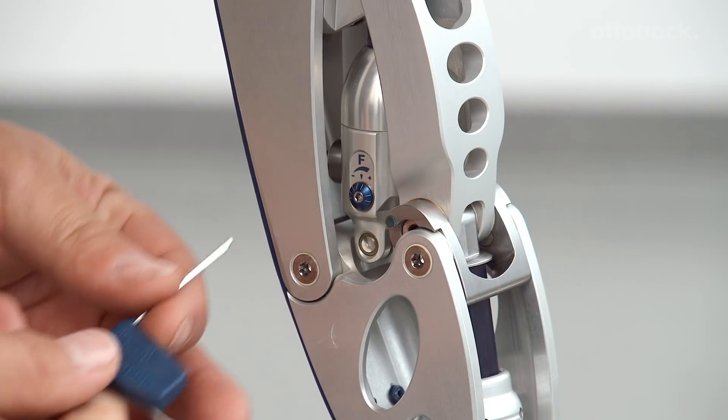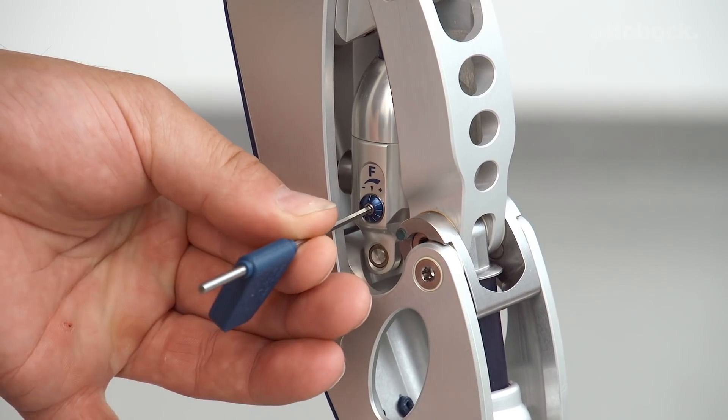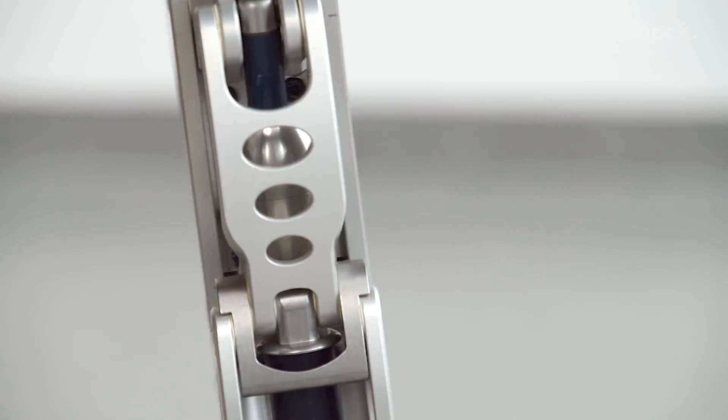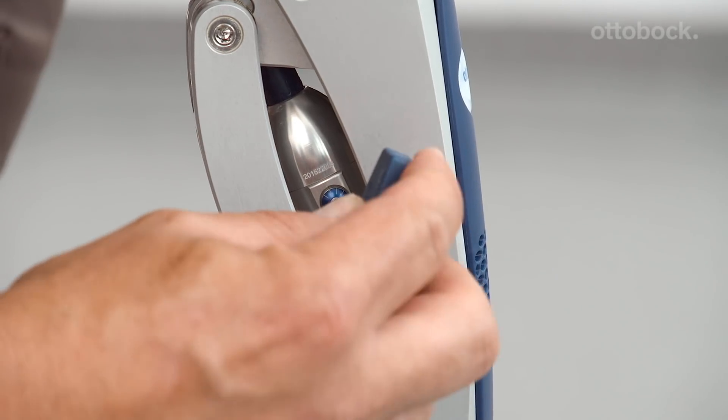Please check the factory settings before fitting the user. The default factory setting is set to minimum for the extension and to medium for the flexion damping. The EBS unit is set to provide low resistance.